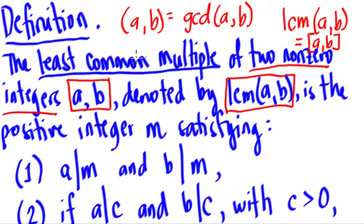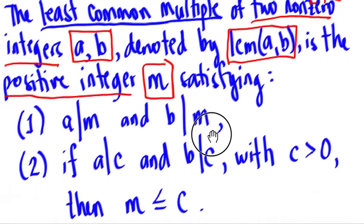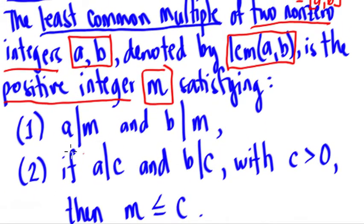Again, the least common multiple of two non-zero integers a and b, denoted by LCM of a and b, is the positive integer m satisfying the following conditions. Number one, first condition: a should be a factor of m and at the same time b is also a factor of m.